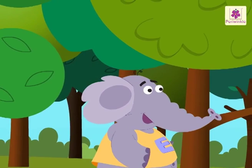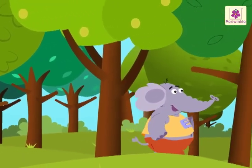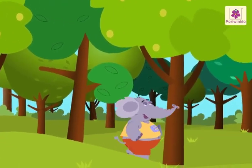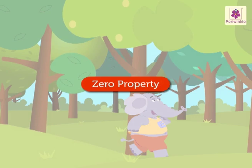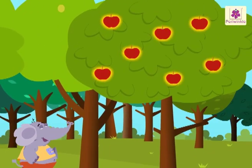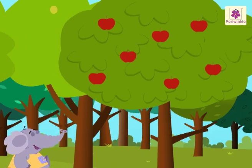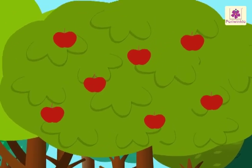Look at Ellie the elephant. She is wandering in the forest. Come, let's learn the zero property with her. Ellie saw seven apples on an apple tree. She ate none of them. How many apples are left on the tree?